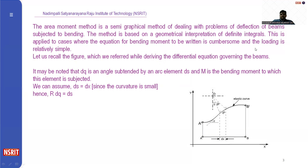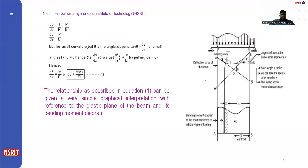Let us recall all the derived equations — the differential equations governing the beams. Now let us take a beam carrying load from position A to B with an angle of theta. The radius of curvature is assumed to be small and the bending moment is M.